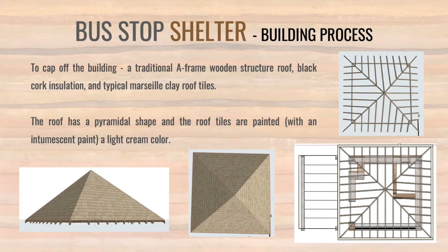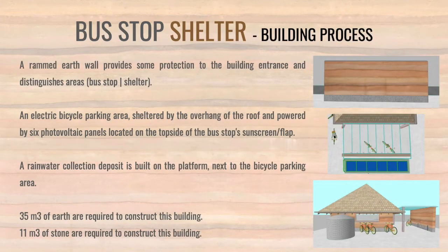To cap off the building, we opted for a traditional roof composed of an A-frame wooden structure, black cork insulation — which doubles as interior ceiling lining — and Marseille clay roof tiles, very typical in Portugal. The roof has a pyramidal shape, and the roof tiles are painted with an intumescent paint, a light cream color, so that it is more identifiable in the distance as a meeting point and shelter, as required by the Safe Village program. On the outside, there is a round earth wall that provides protection to the building entrance and distinguishes the road and bus stop from the shelter area. On the concrete platform, set against one of the shelter's walls, is an electrical bicycle parking area, sheltered by the overhang of the roof and powered by six photovoltaic panels located on the top side of the bus's sunscreen flap.